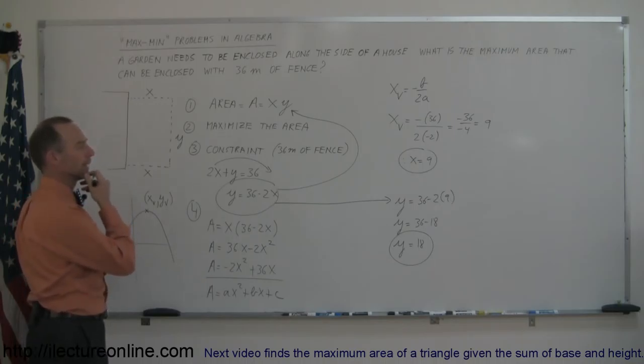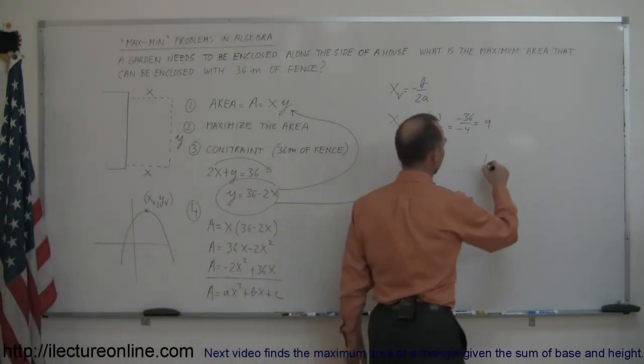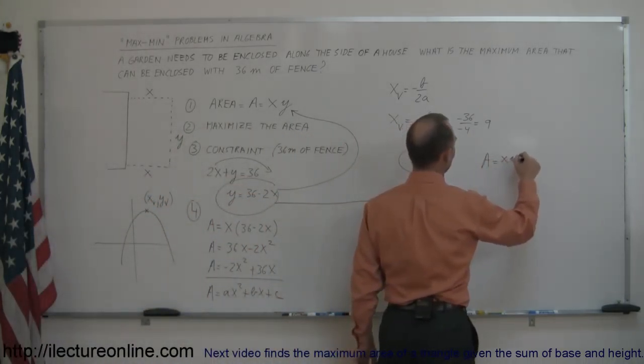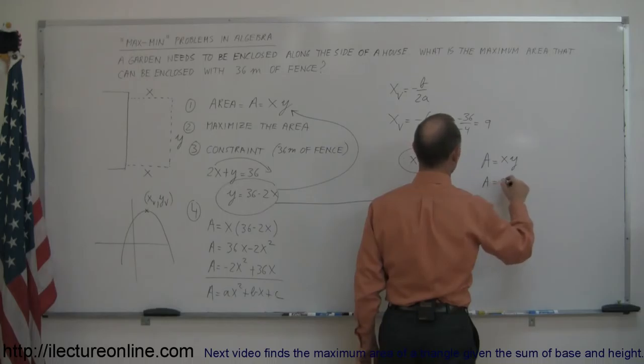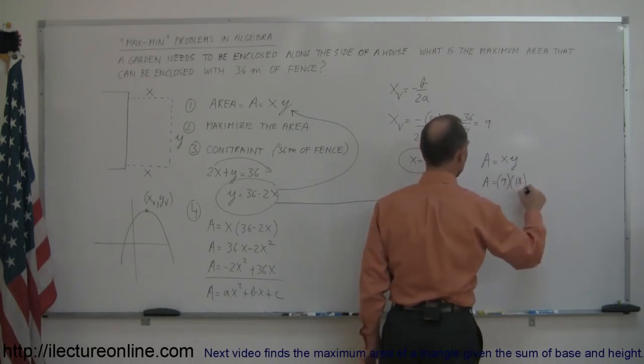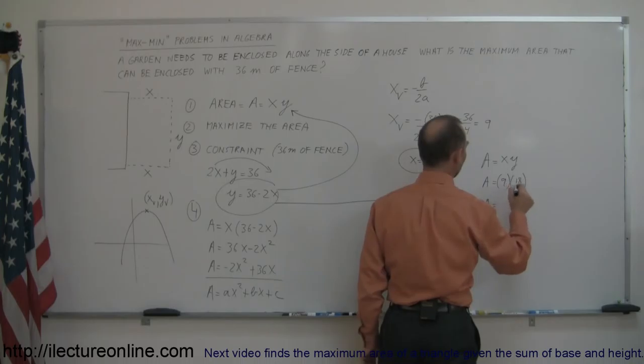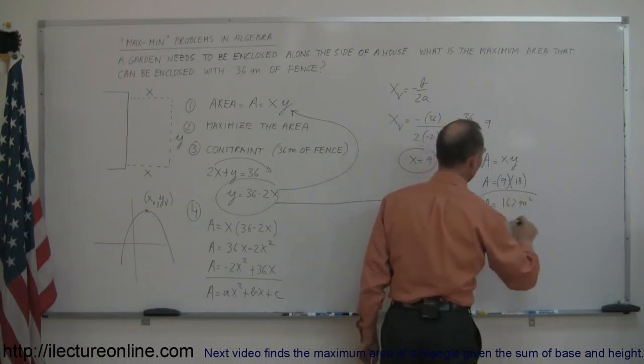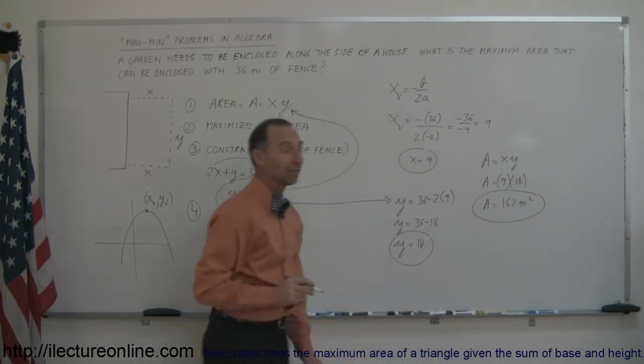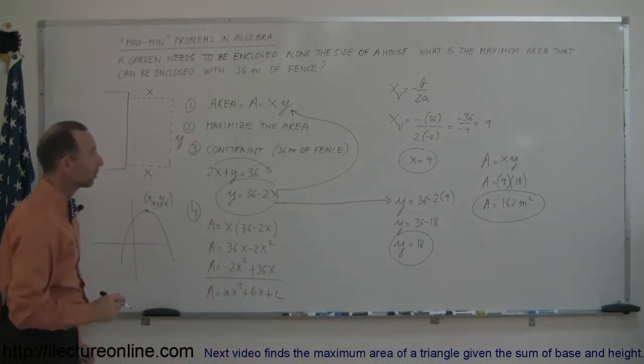Now, what's the area then? Well, we have the equation, area is equal to x times y, so area is equal to 9 times y, which would be 18. And so a is equal to 162, and of course, the units would be square meters. So that's how you find the maximum value using algebra.